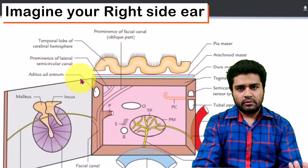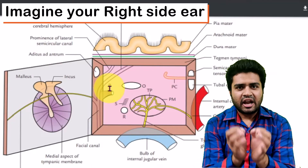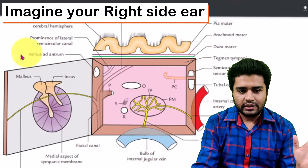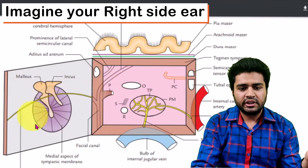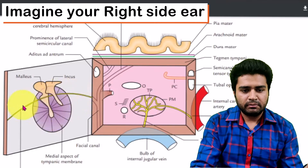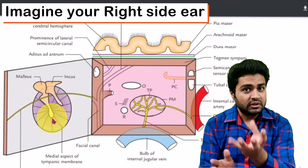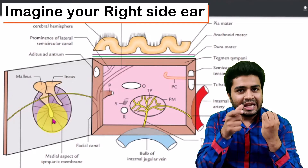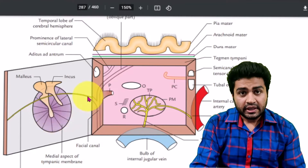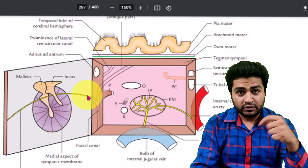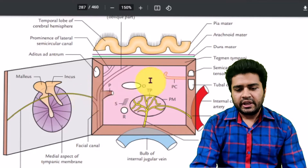Now we move towards the relations of the middle ear cavity. We will start from the easiest — the lateral wall. On the lateral wall there is the tympanic membrane, and you should also remember the chorda tympani, which brings taste sensations from the anterior two-thirds of the tongue.